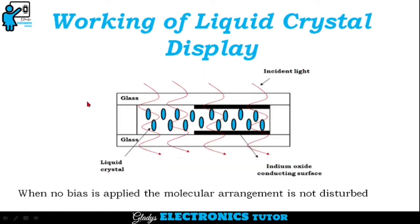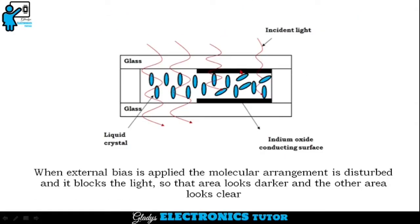Light passes from one polarizer to the next, and external supply is applied through the electrodes. When no bias is applied, the molecular arrangement of the liquid crystal is not disturbed. When external bias is applied through the electrodes, the molecular arrangement is disturbed, blocking the light — so that area looks darker and the other area looks clear.